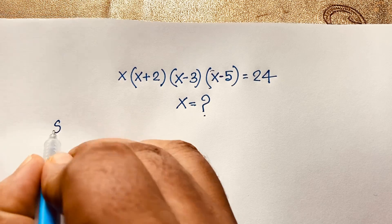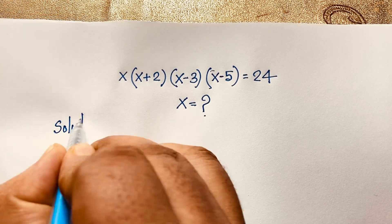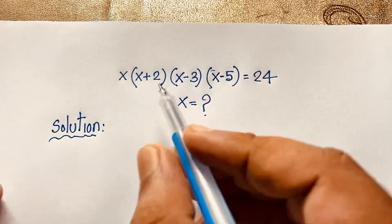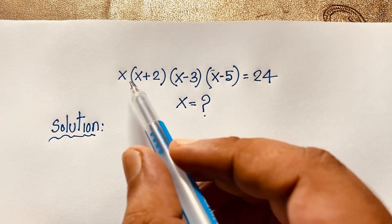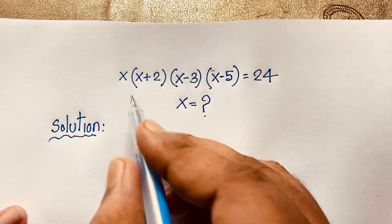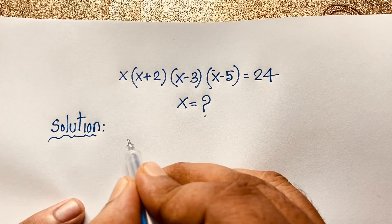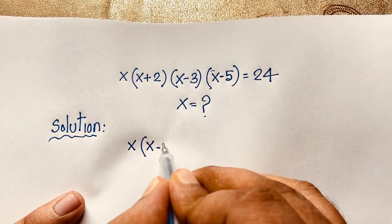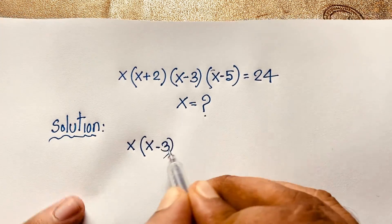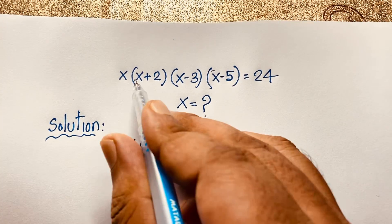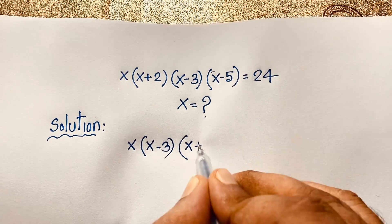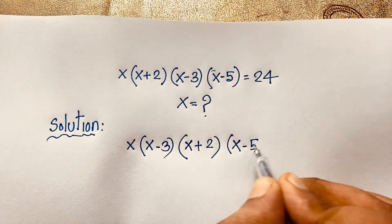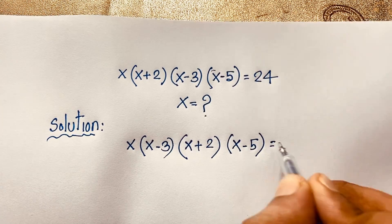So our math solution — I solve this question by an easy method. Here, I take this x, so I rearrange the factors: it will be (x)(x-3) times (x-2)(x-5) is equal to 24.